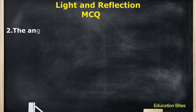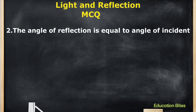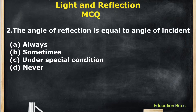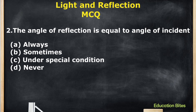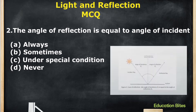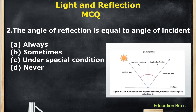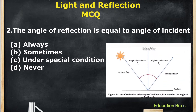Moving on to the next question: The angle of reflection is equal to the angle of incidence. As we know, according to the law of reflection, angle I is always equal to angle R. So the correct option is A.